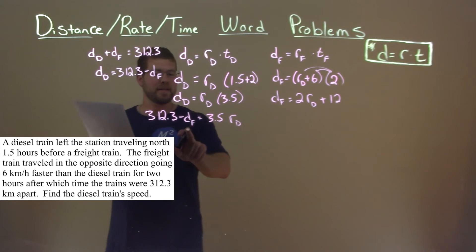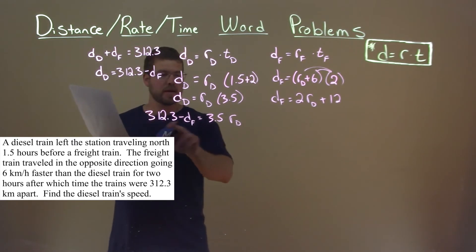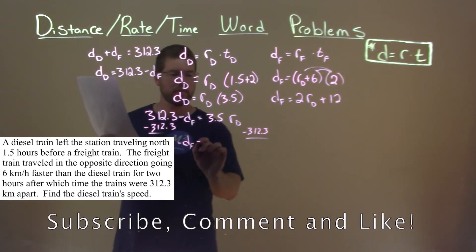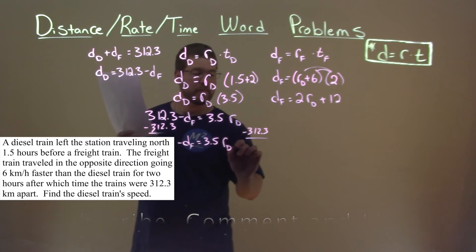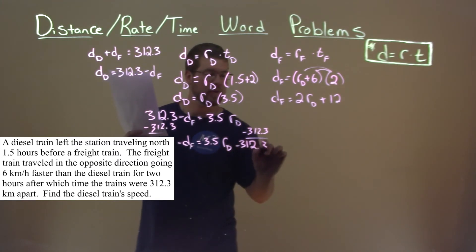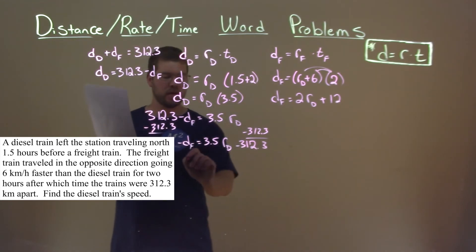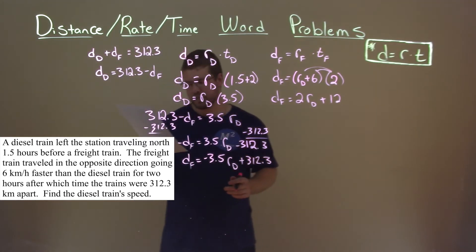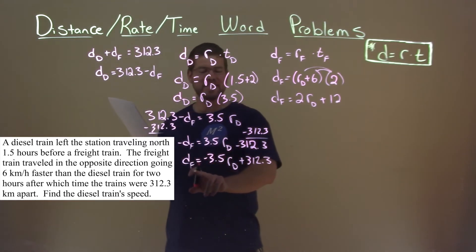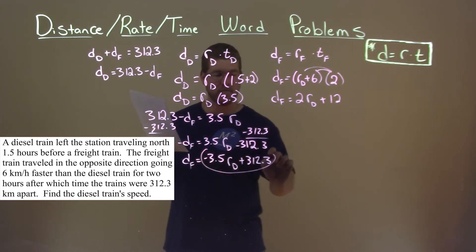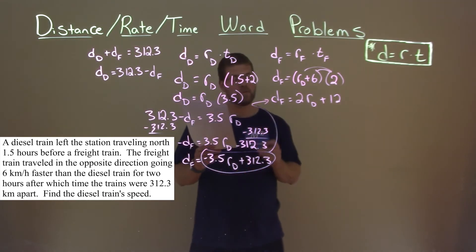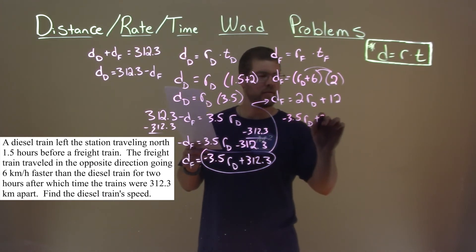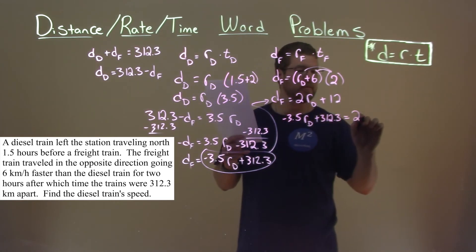Now let's get the distance of the freight train by itself. I'm going to subtract 312.3 from both sides. We have negative distance of the freight train equals 3.5 times the rate of the diesel train minus 312.3. Bringing the negative over, distance of the freight train equals negative 3.5 times the rate of the diesel train plus 312.3. We can now plug this in for the distance of the freight train, giving us: negative 3.5 times the rate of the diesel train plus 312.3 is equal to 2 times the rate of the diesel train plus 12.